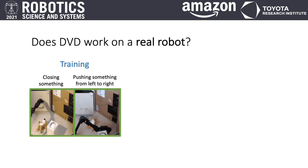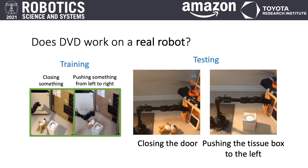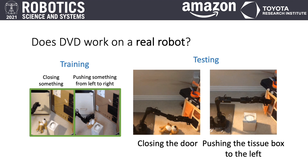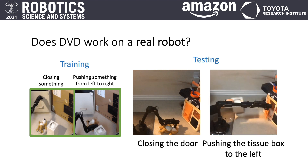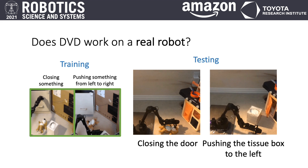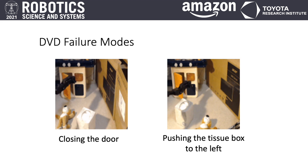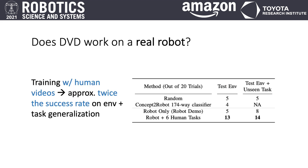Finally, we study how DVD with human data enables better environment and task generalization on a real Widow X200 robot. We train DVD on human videos and 80 robot videos from an original training environment for two tasks. We then first evaluate DVD in a new environment with the task of closing a toy kitchen door from a human video demonstration, and we see that the robot is able to successfully close the door. We also evaluate DVD in the new environment with an unseen task of moving the tissue box to the left, and find that the robot is able to successfully complete the task. However, even when DVD produces a good reward signal, mistakes in visual planning can still sometimes lead to task failures. Nevertheless, in both tasks, DVD has about twice the success rate when leveraging the diverse human dataset than when relying only on robot videos.